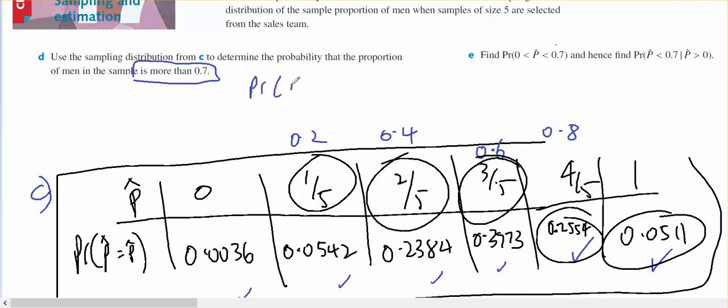The probability that P hat is bigger than 0.7, which will be 0.8 and 1, so it's going to have these two values added together. 0.2554 plus 0.0511, that's going to give you 0.3065.